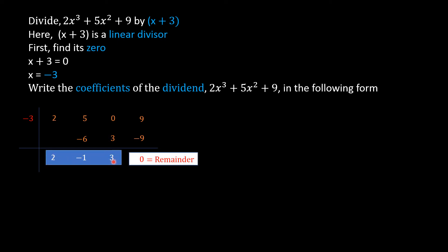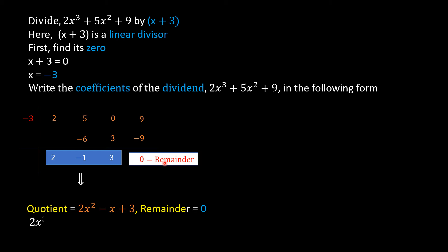With these three coefficients we can write the quotient. There are 3 coefficients; subtracting 1 gives degree 2, so the quotient is a quadratic polynomial: 2x² - x + 3, where 2 is the coefficient of x², -1 is the coefficient of x, and 3 is the constant term. Remainder is 0. We write the dividend as (x + 3)(2x² - x + 3).